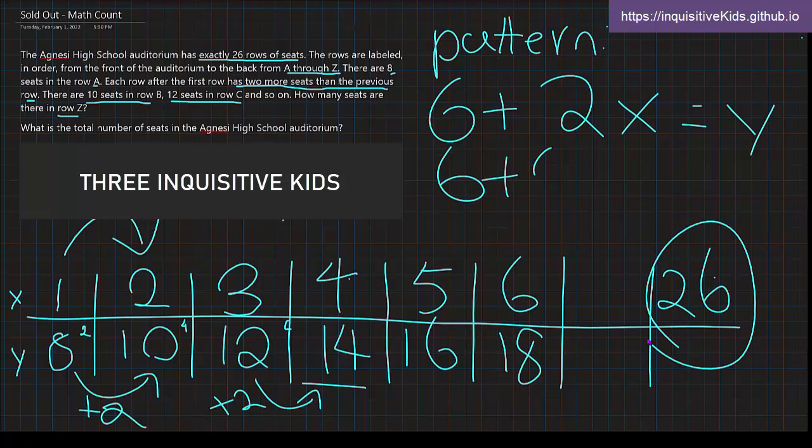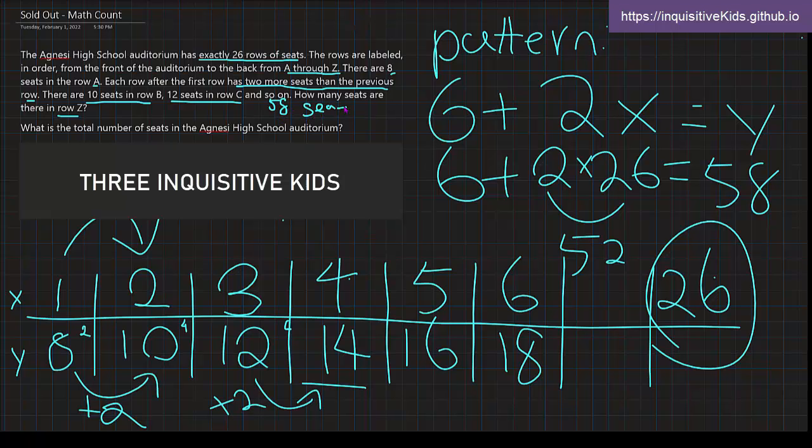Then we would do 6 plus 2 times 26. Which, after calculating, you know, this becomes 52. 6 plus 52 is 58. So, how many seats are there in row Z? That would be 58 seats. And that's the answer to the problem.